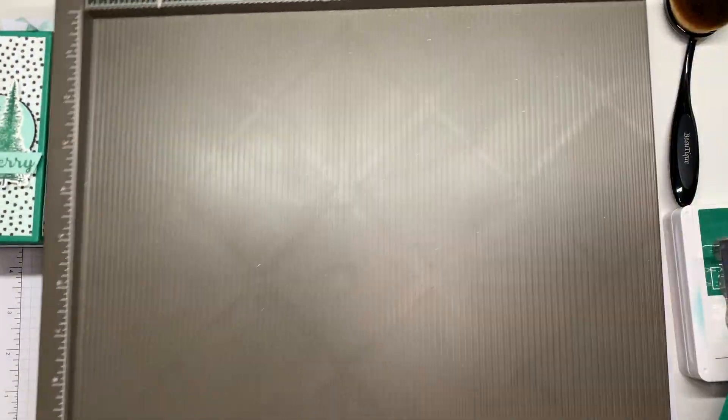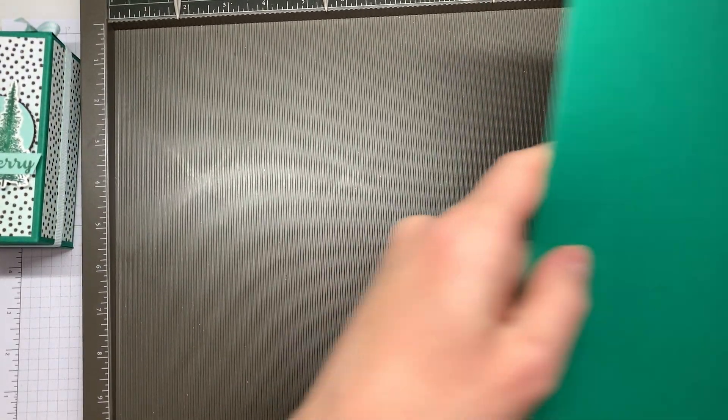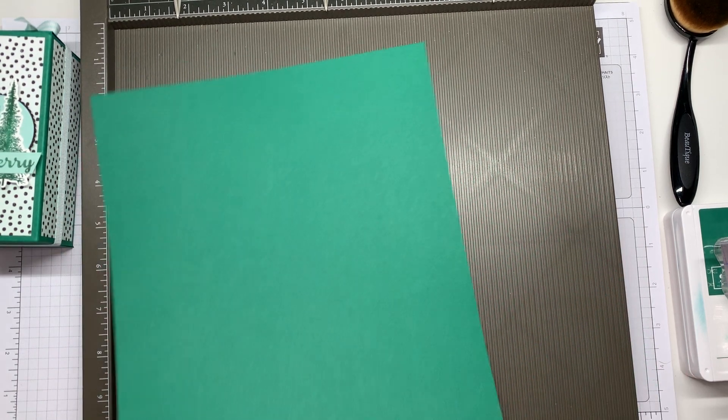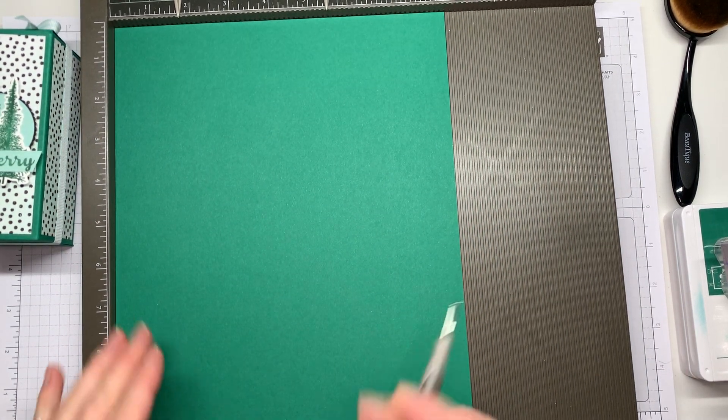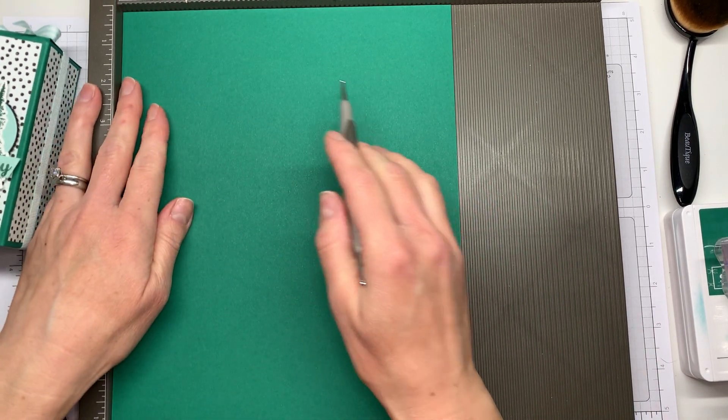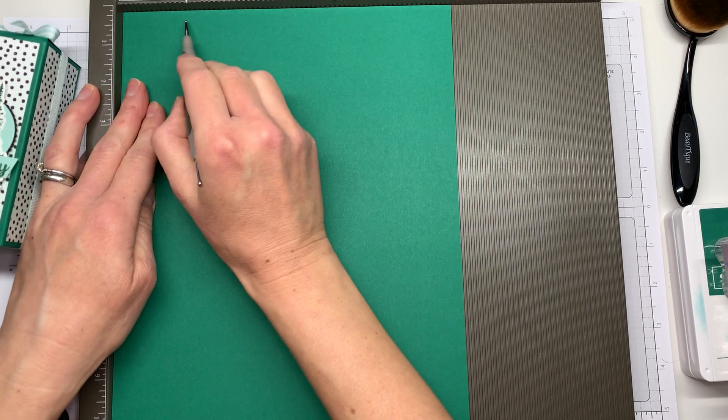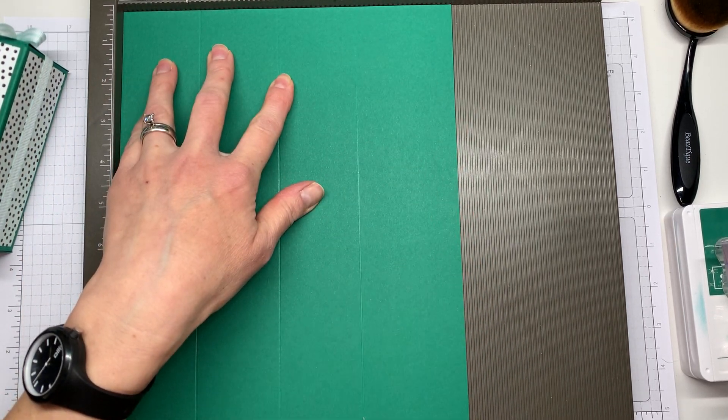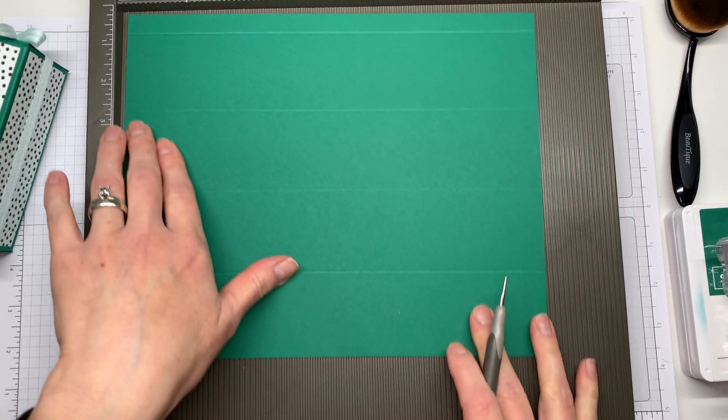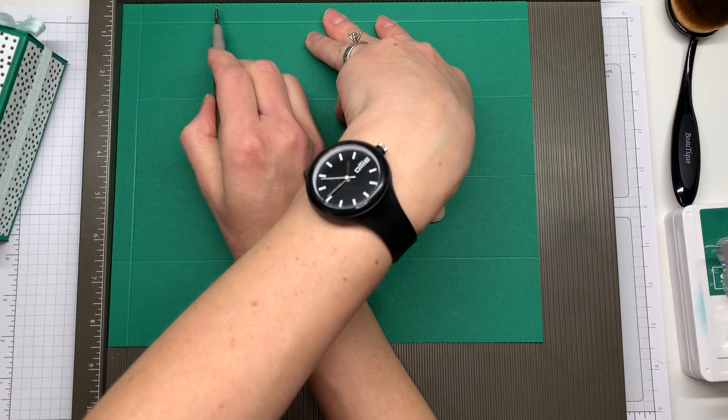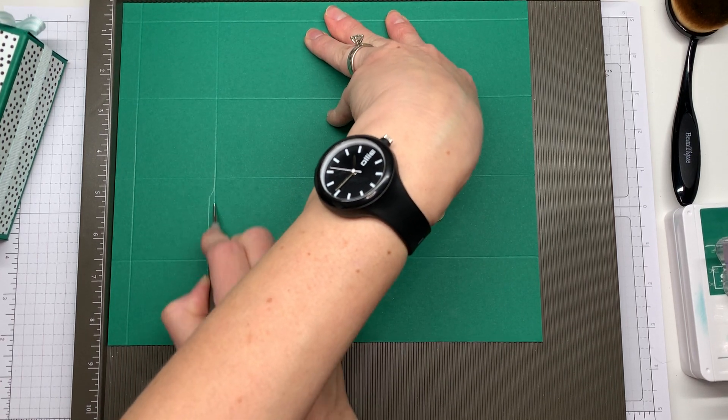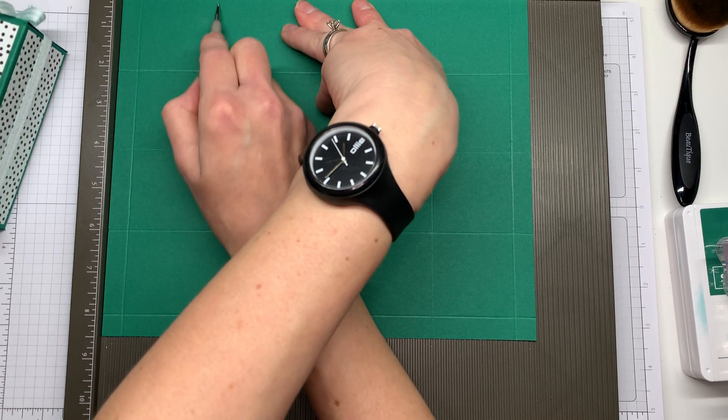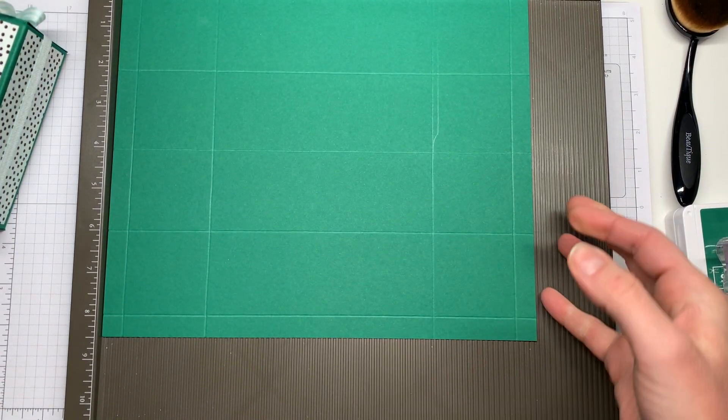So we're going to start with a piece of Shaded Spruce cardstock. It's eight and a half by ten and a half and I've heard this box referred to as a two four six eight box. The reason for that is that on the eight and a half inch side, the short side, you score at two, four, six and eight. And then when you rotate it you're going to score at a half an inch and two and a half inches. Then flip this 180 degrees and again score at half an inch and two and a half inches.